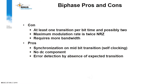Biphase pros and cons: Cons — at least one transition per bit and possibly two; maximum modulation rate is twice that of NRZ; requires more bandwidth. Pros — synchronization, no DC component, self-clocking, supports error detection by the absence of an expected transition.